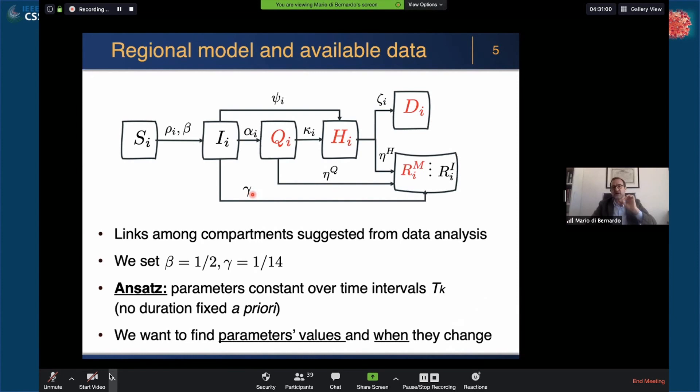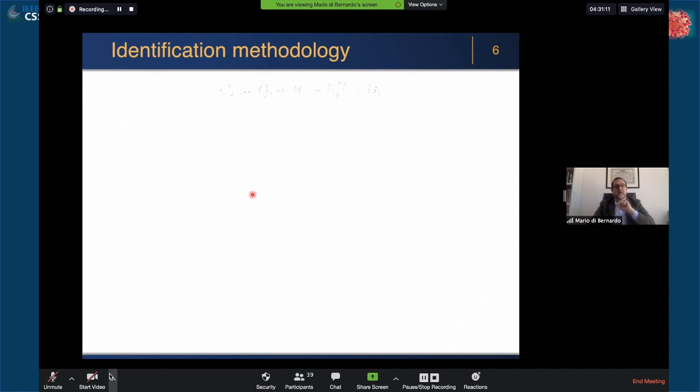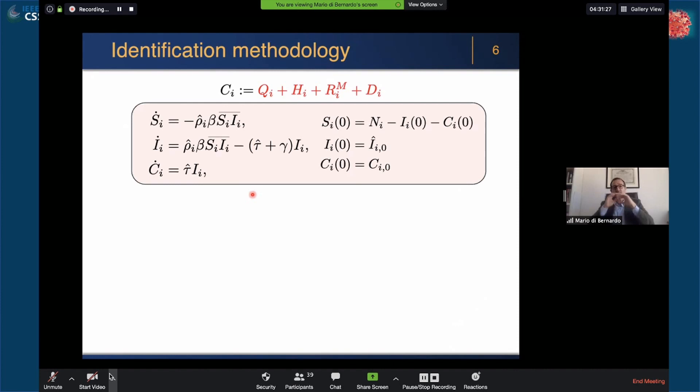I tried to put together a cartoon to show you the data that gives the real essential components of our identification strategy. What we start with is the total number of cases that have been detected, the number of these compartments. Using this CI, we actually look at the first bit of the model, the bit that involves S, I and the CI.